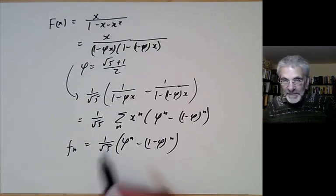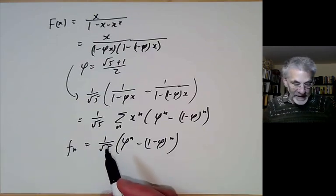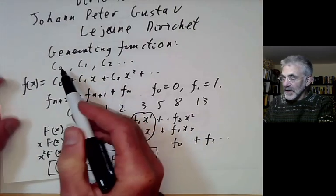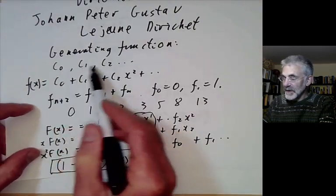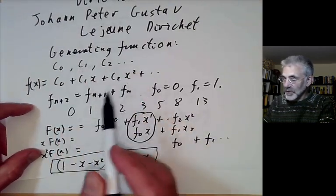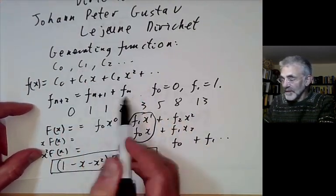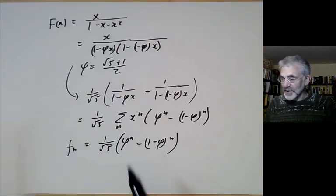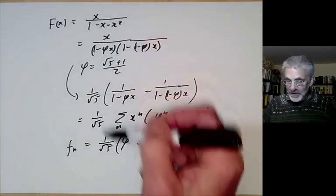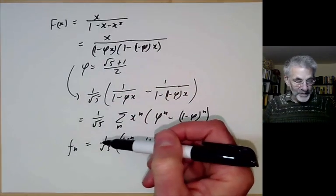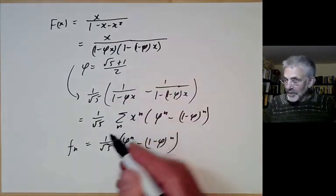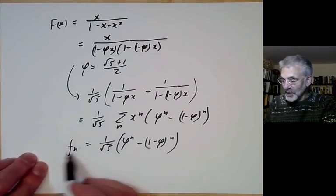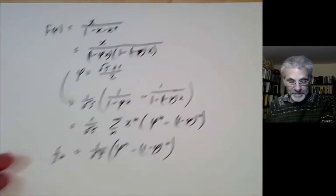So that's a typical use of generating functions: you start with a sequence of numbers, convert it into a function, identify what that function is, and then work back to find information about your original sequence.